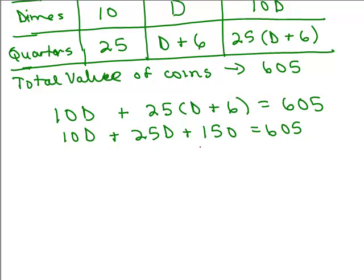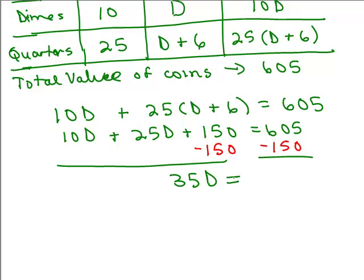And I'm also going to subtract 150 from both sides at the same time so that I get 35D equals 455. And then I've got to divide both sides by 35, use a calculator or do this longhand. So we get D equals 13.